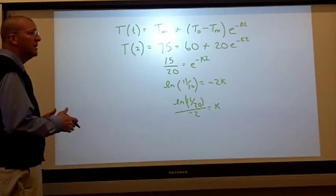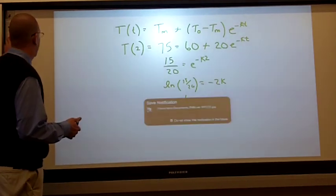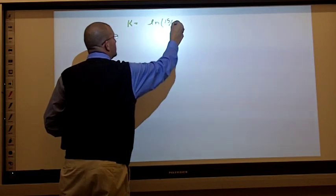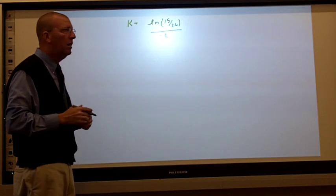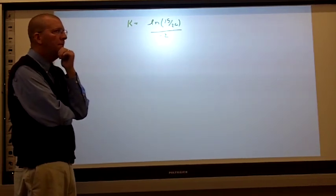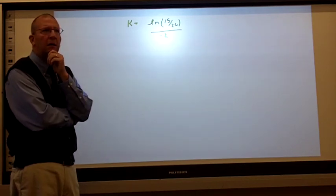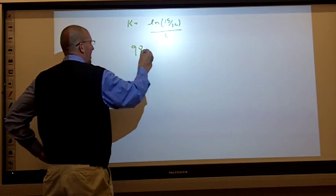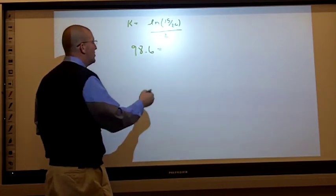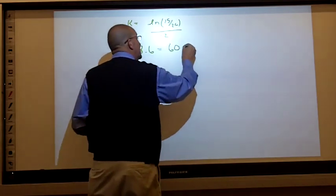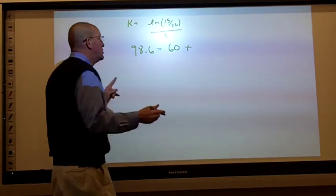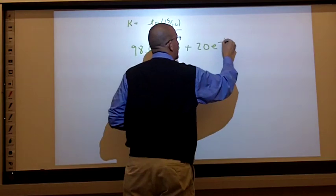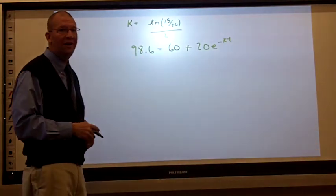Let's finish the problem. Now that we have our value for K, we simply rewrite the equation. Our value for K was natural log 15/20 over negative 2. Now, let's see if we can figure out what the temperature was when the body died. What was the temperature when the body died? That's right, 98.6. That goes in for our big T. What's the temperature of the medium? Hasn't changed, 60 degrees. E to the negative K, that's the value we'll use for K. And then little t. And we're going to solve for little t.